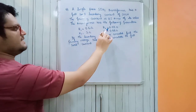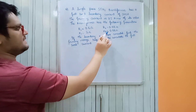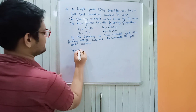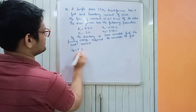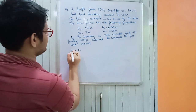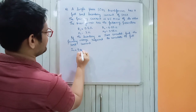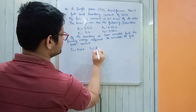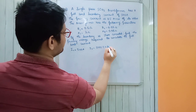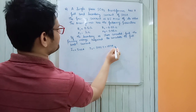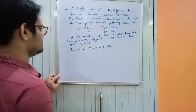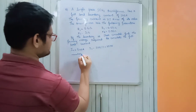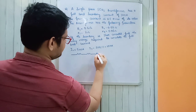We have the primary and secondary resistance and reactance values. The secondary current is 500 ampere, and the primary current I1 = (1/5) × 500 = 100 ampere. These are the given values.